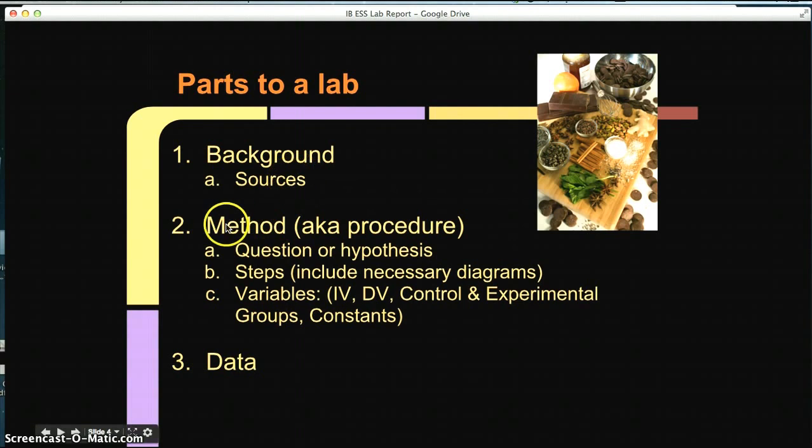So far you have the background, the method, and the third part is going to be data. You will want an area for tables and I like to start data collection with this. Just data and you're going to have table one, table two, however many tables you need.